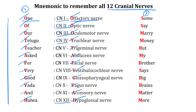So with the help of this mnemonic — one of our Telugu teacher asked for very good vada and halwa — we can remember the names of all 12 cranial nerves in sequence from CN1 to CN12. Now we will talk about the second mnemonic, with which it is very easy to remember the types of nerve — whether sensory, motor, or both.